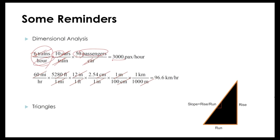The same applies to converting miles per hour to kilometers per hour. If we have 60 miles per hour: there are 5,280 feet in one mile, 12 inches in each foot, 2.54 centimeters per inch, 100 centimeters per meter, and 1,000 meters per kilometer.